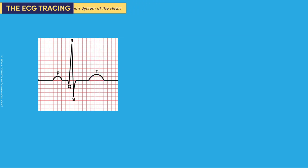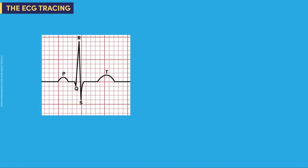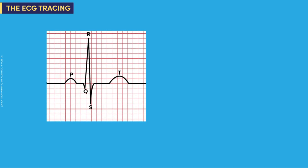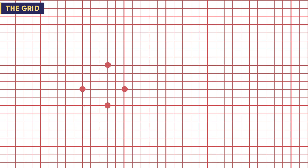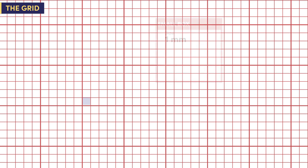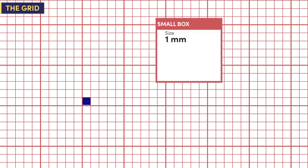Now that we have an understanding of the basic structure of an ECG waveform, let's focus on how the grid works for measurements. On the grid, you will notice large boxes and small boxes. The dark thick lines form the large boxes and the light thin lines form the small boxes. One small box has several units of measurement associated with it: it represents the size of one millimeter, the amplitude of 0.1 millivolts, and the time of 0.04 seconds.